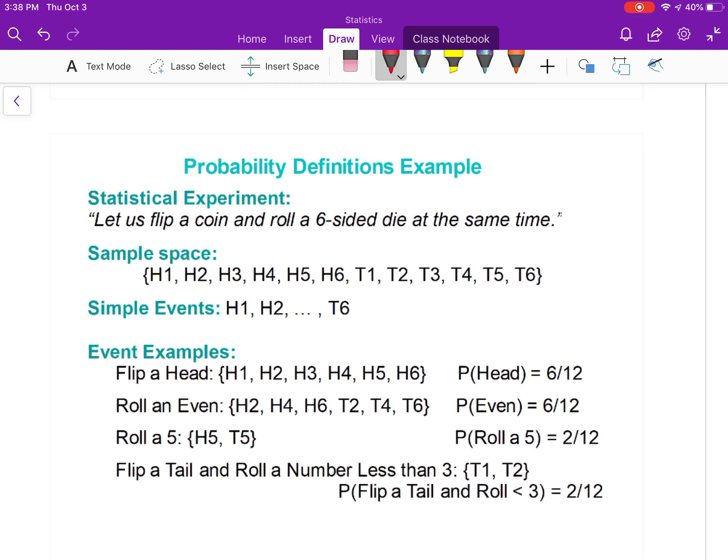The sample space is all the possible simple events. I have a coin flipping and dice rolling—that's the experiment. The sample space would be all the possible outcomes: H1 (heads with a 1), heads with a 2, heads with a 3, all the way to heads with a 6, tails with a 1, all the way to tails with a 6. There are 12 outcomes, so if you notice, all my probabilities I find are over 12.